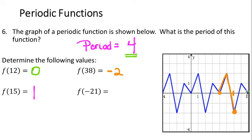Finally, for f(negative 21), we're moving in the negative direction. A value close to negative 21 that's divisible by 4 is negative 20. At X = negative 20, we're at 0 at the beginning or end of a cycle. Negative 21 is 1 unit in the negative direction away from negative 20, which corresponds to a function value of 1.